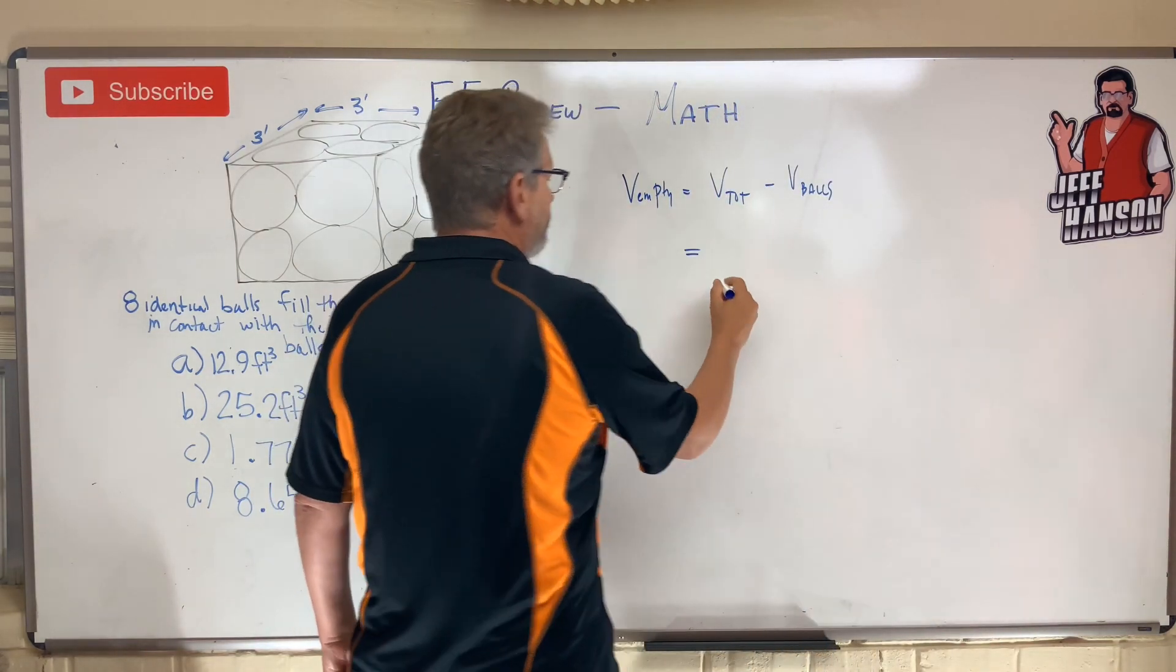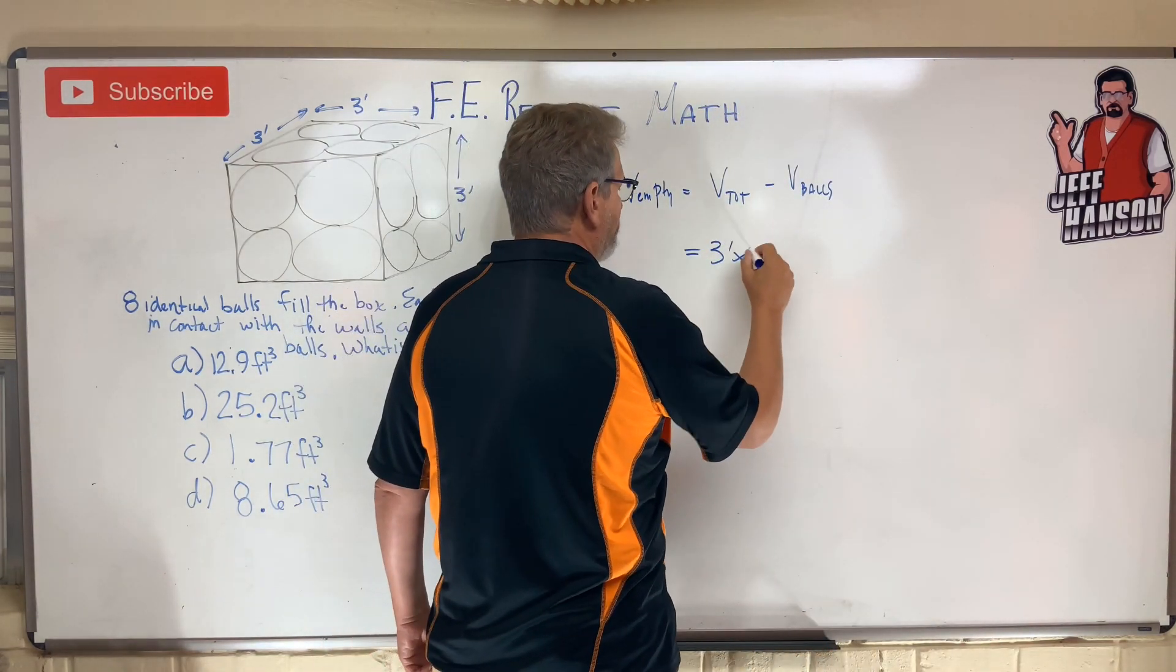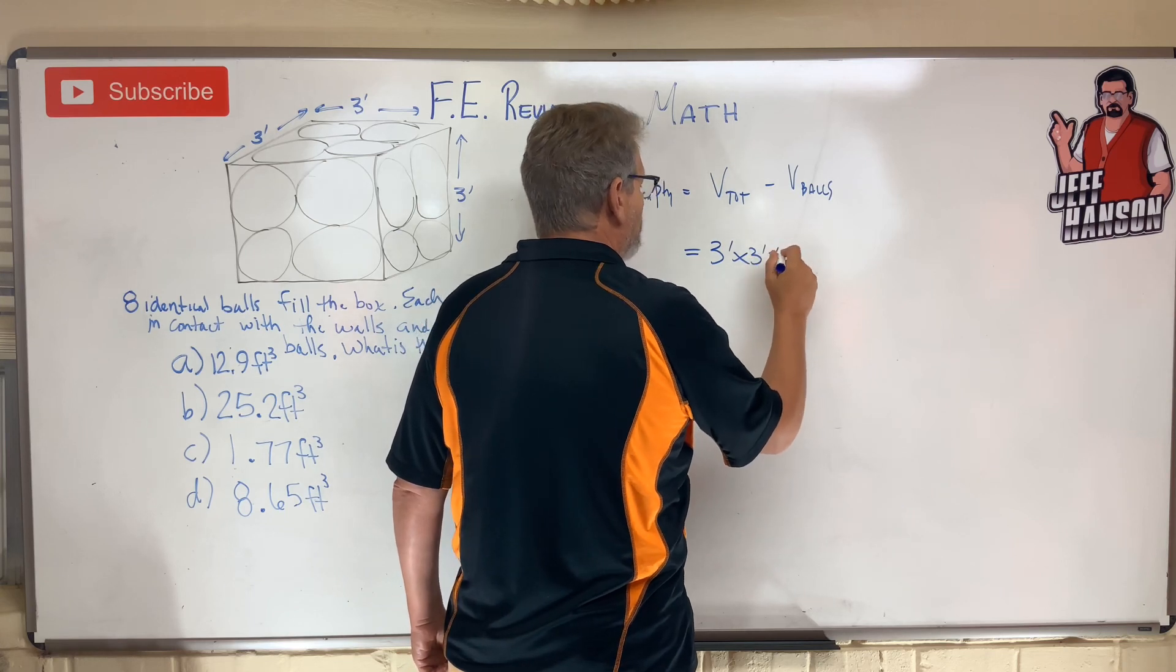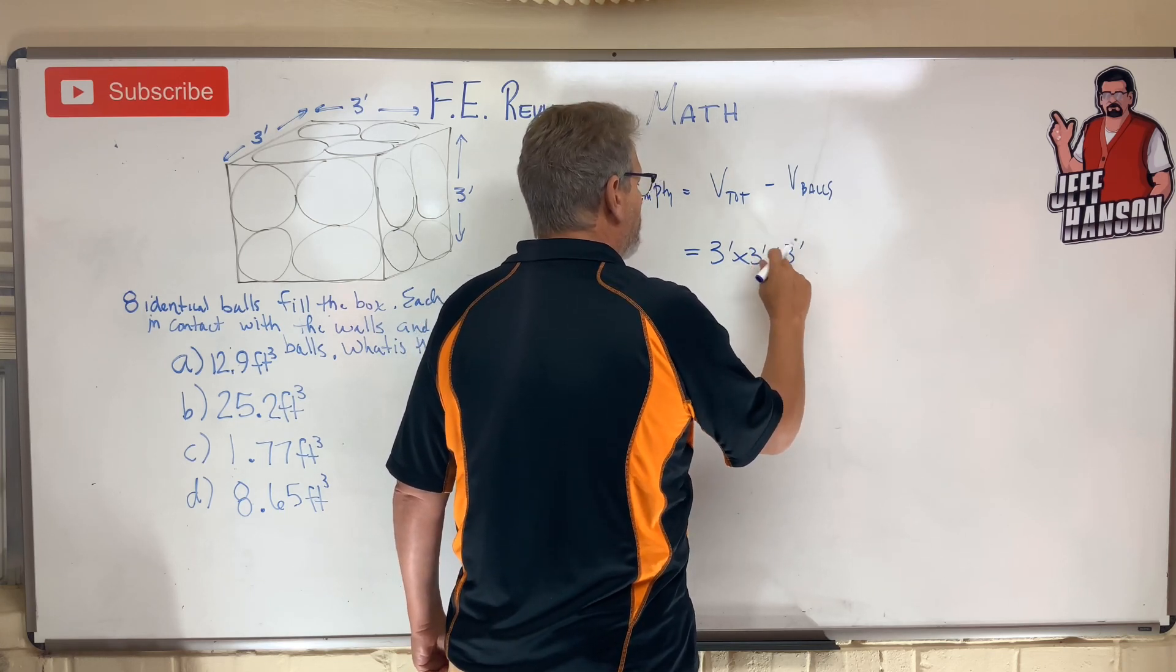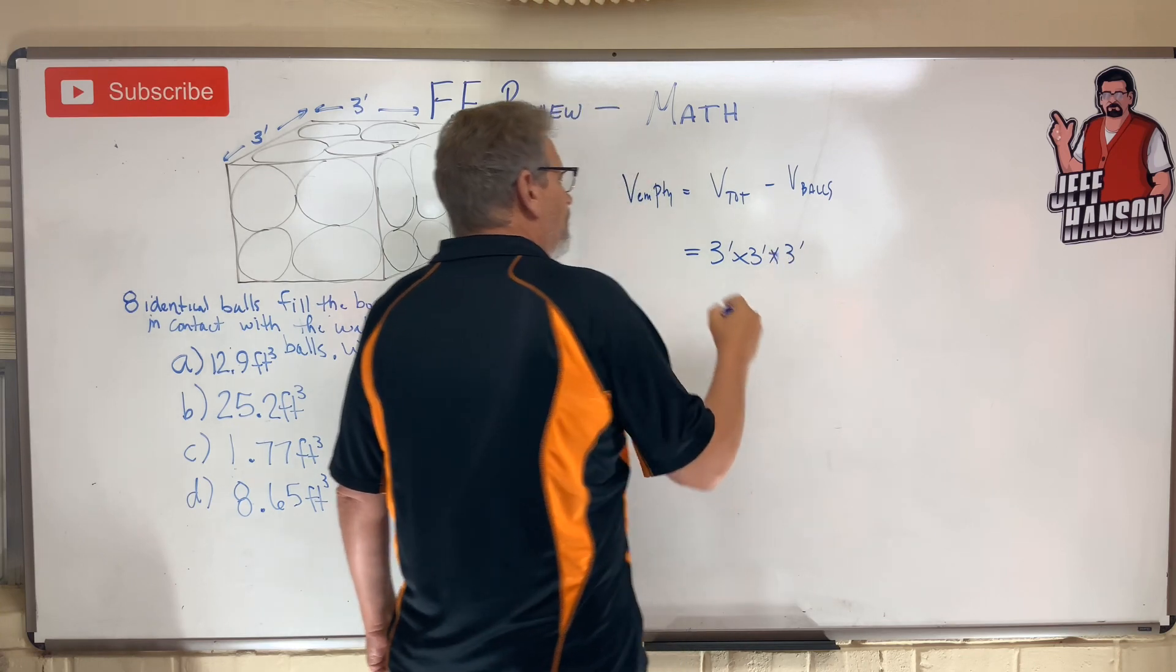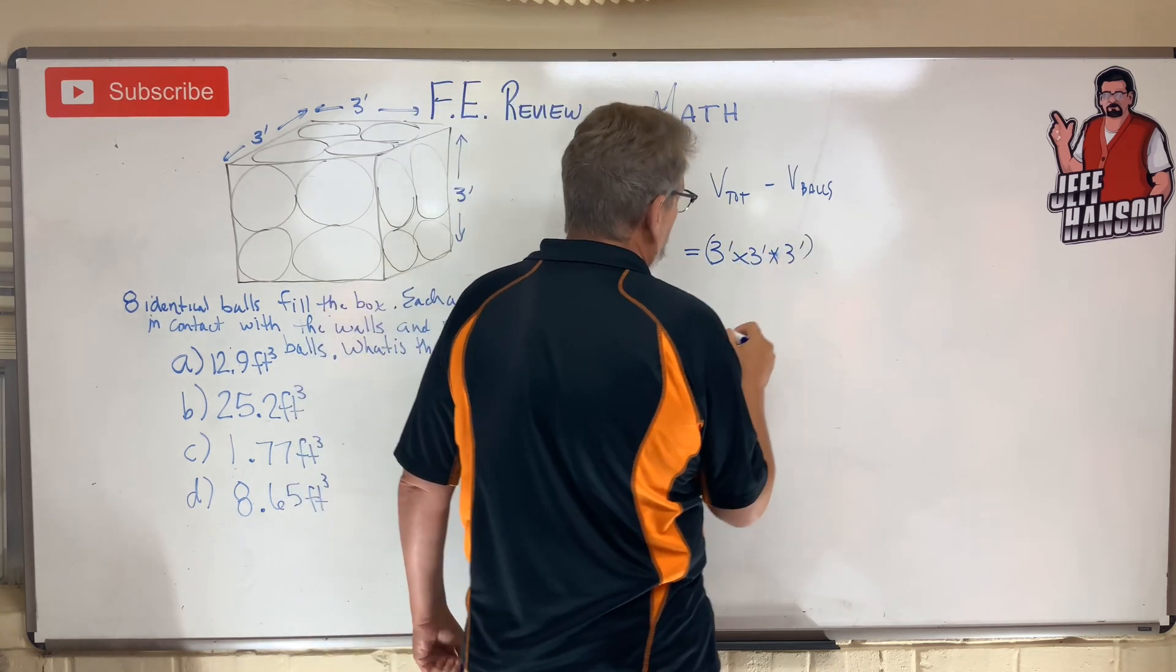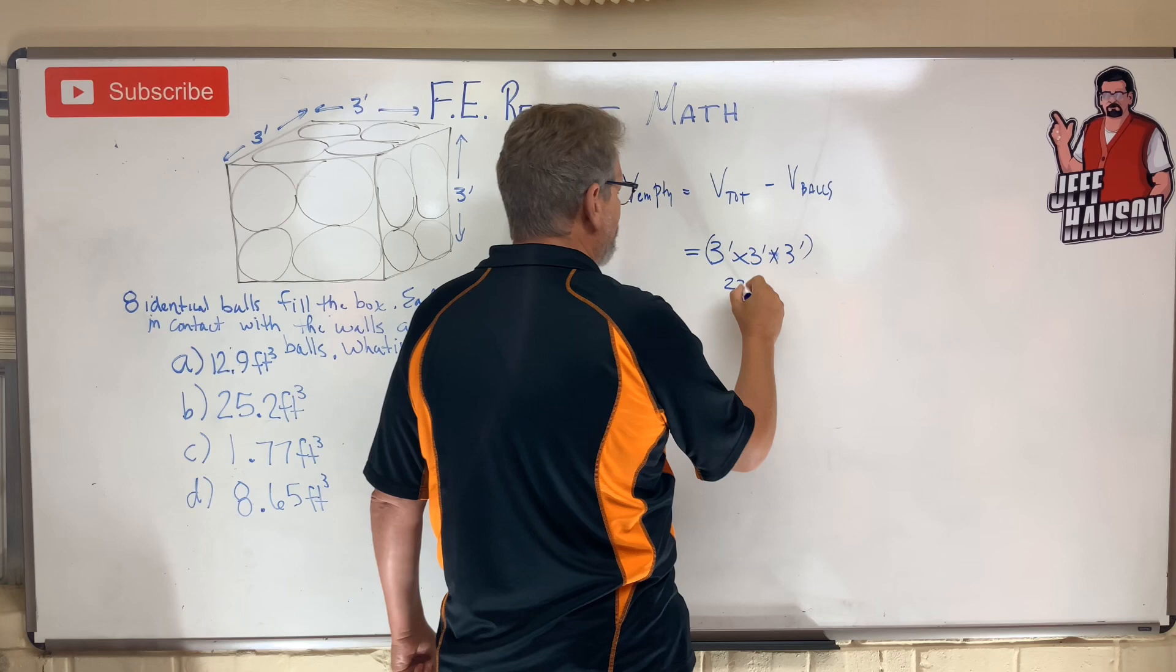So, the volume total is three feet by three feet by three feet. That's a bye. Oh, no! Okay, that's nine times three. That's 27, right?